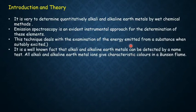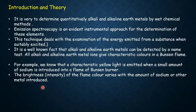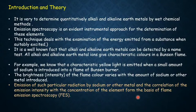All alkali and alkaline earth metal ions give characteristic colors in flame. For example, when sodium is burnt in the flame it shows a characteristic yellow light, and the brightness or intensity of the flame color varies with the amount of sodium or other metal introduced. The emission of such particular radiation and the correlation of the emission intensity with the concentration of the element forms the basis of flame emission spectroscopy.